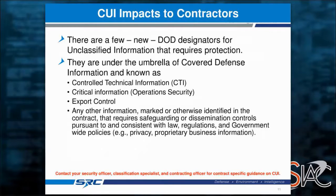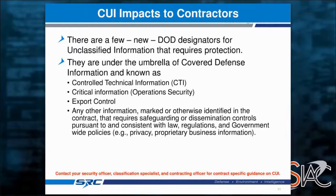Defense contractors need to be aware of a term called Covered Defense Information, or CDI. It falls into four things: controlled technical information, critical information, export control information, and — my favorite catch-all — any other information marked or otherwise identified in the contract that requires safeguarding and dissemination controls pursuant and consistent with laws, regulations, and government-wide policies, such as privacy information or proprietary business information. To me this becomes so broad that it will be difficult to identify what is controlled unclassified information as a contractor.